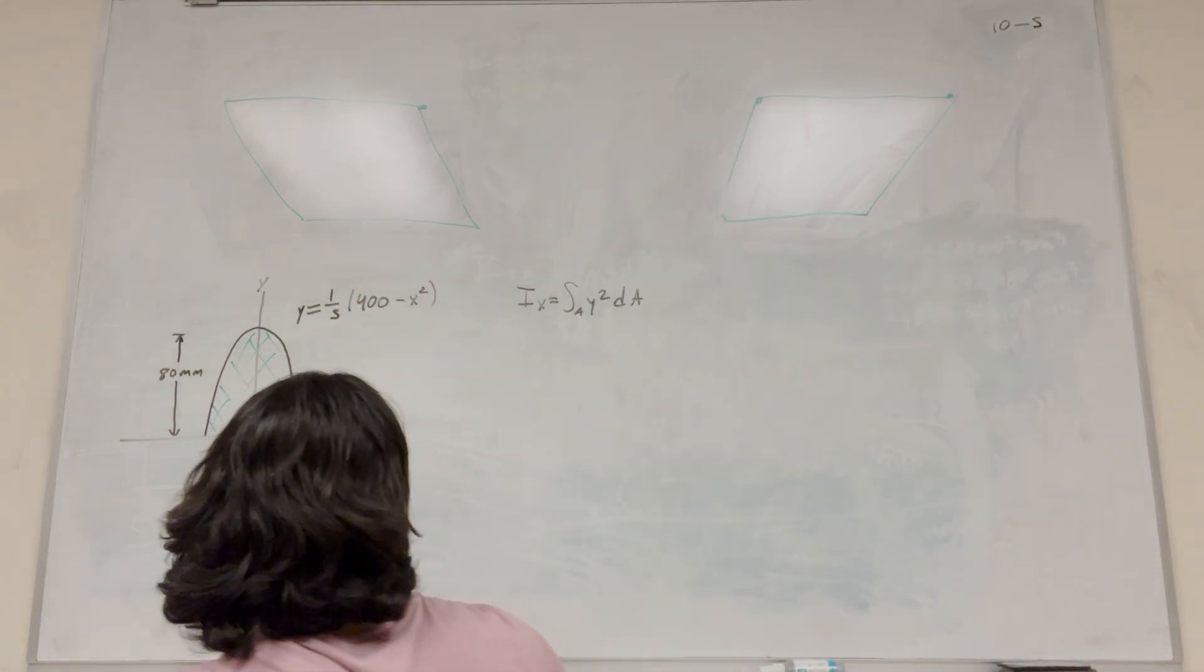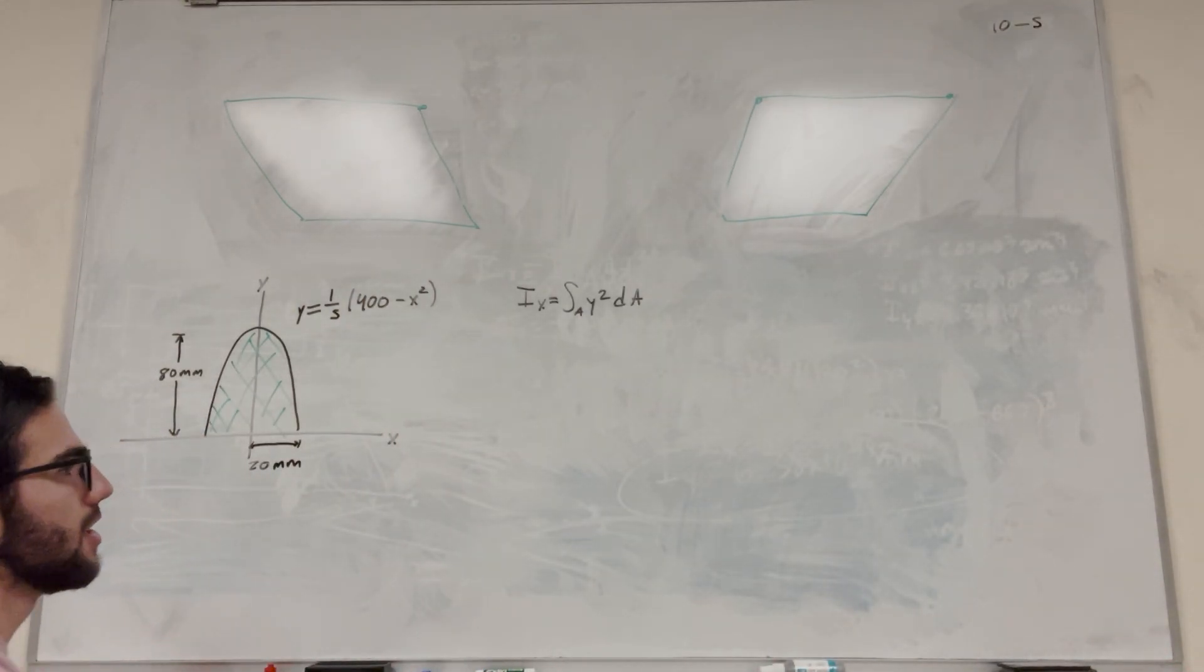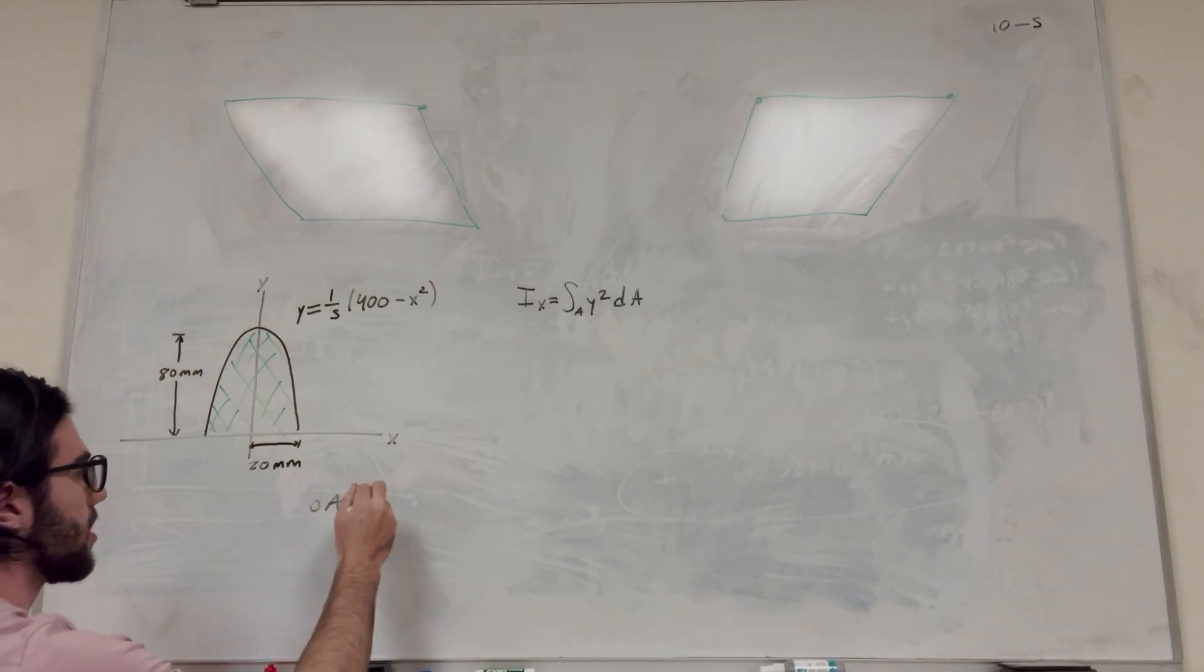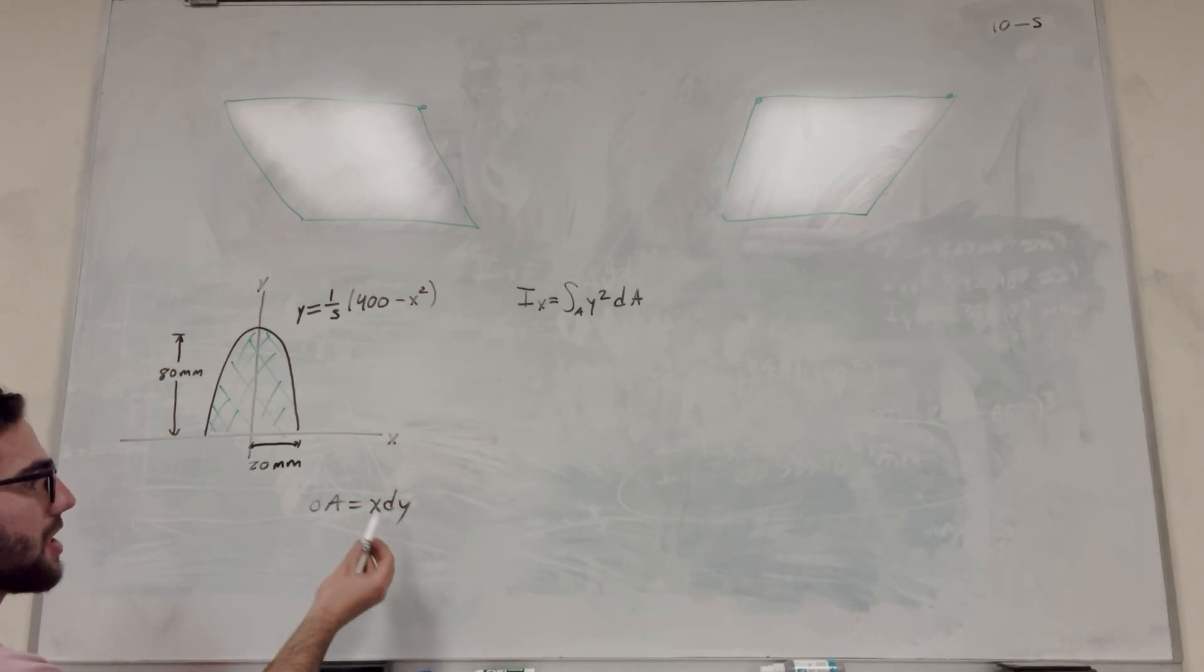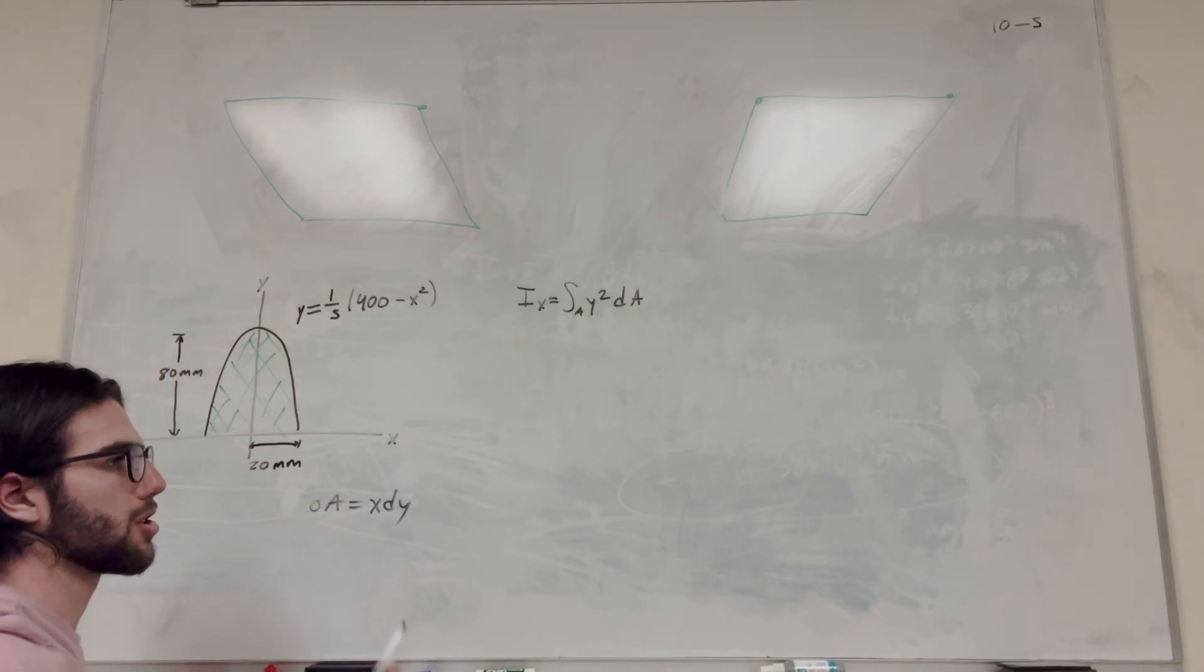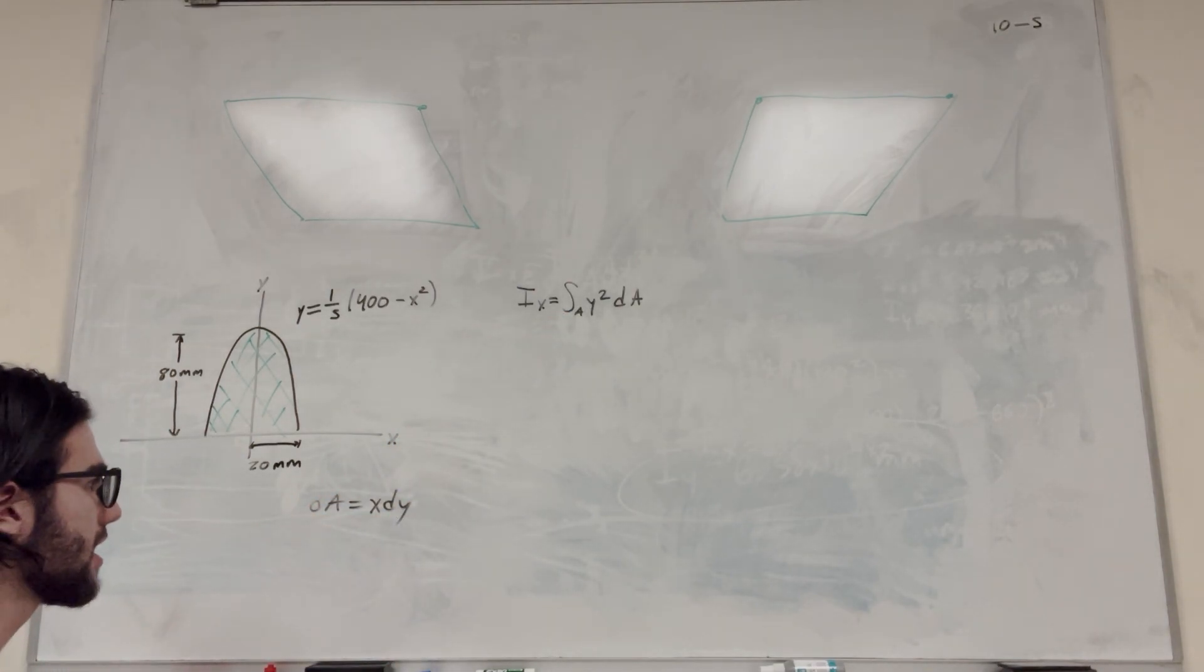So first of all, we're going to find out what dA is going to be in this case. So usually dA you could write as dA equals x dy, or it could be y dx. But in this case, we're going to do x dy because we have this y squared already here, and we're going to integrate with respect to y because it's going to be easier.